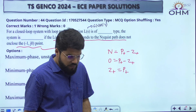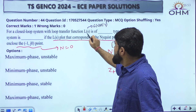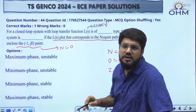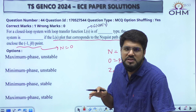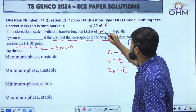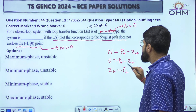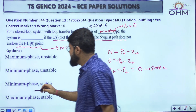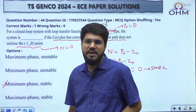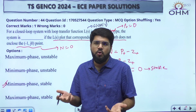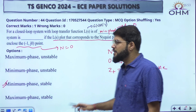If the loop transfer function is minimum phase, then all poles and zeros are in the LHP, so all poles are in LHP, meaning P+ will be 0. So if we fix minimum phase, we get P+ equal to 0, and then Z+ equals 0, and then we can conclude stability. If it is maximum phase, all zeros are in the RHP but some poles may be in the LHP or RHP, so we can't be sure about stability. That is why if it is minimum phase, we can be sure about stability. The option that matches is option number C.